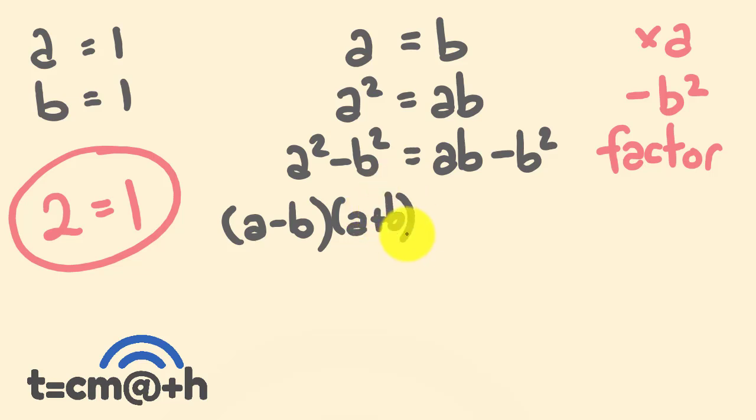So A squared take away B squared becomes the following: becomes A take away B and A plus B. And if you don't believe that, expand it out. That's what this becomes here. This one here, you're going to notice this side of the equation that we have a B on both of these, so we can put a B here. And if I divide B into AB here, I get an A, and if I divide B into B squared here, I get a B here. Okay, so this is where this has been factorized.